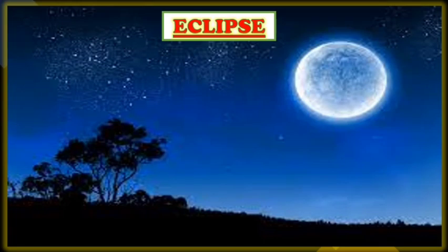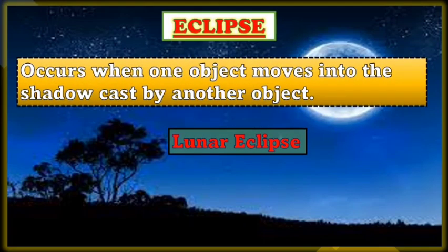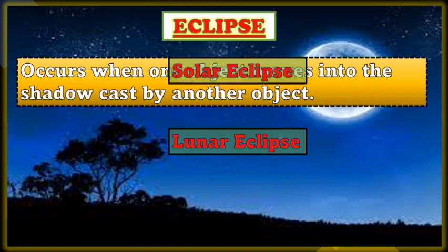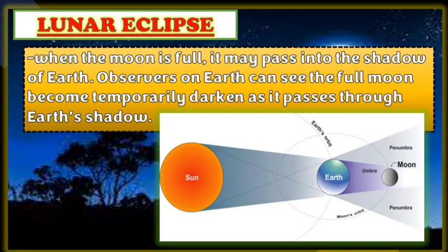Next, let's talk about eclipses. An eclipse occurs when one object moves into the shadow cast by another object. We have two types: the lunar eclipse and the solar eclipse. A lunar eclipse occurs when the Moon is full and passes into the shadow of Earth. Observers on Earth can see the full Moon become temporarily darkened as it passes through Earth's shadow — meaning the Earth is positioned between the Sun and the Moon.